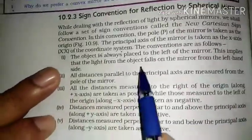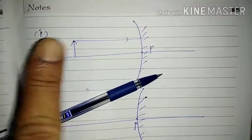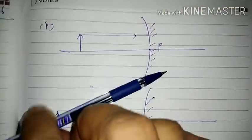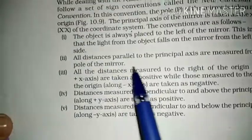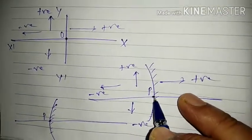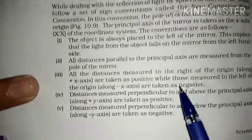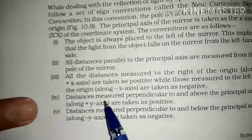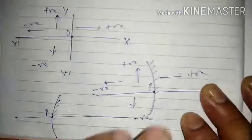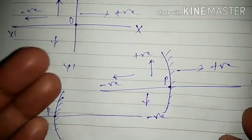This implies that the light from the object falls on the mirror from the left-hand side, so light always incidents from left to right. Second point: all distances parallel to the principal axis are measured from the pole of the spherical mirror. Third point: all distances measured to the right of the origin along the X axis are taken as positive, while those measured to the left of the origin along the X axis are taken as negative.